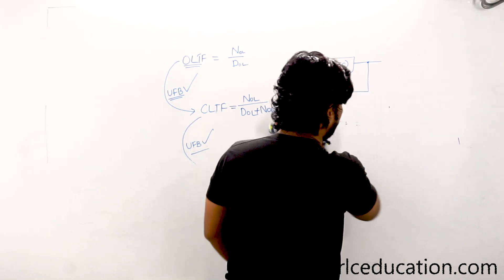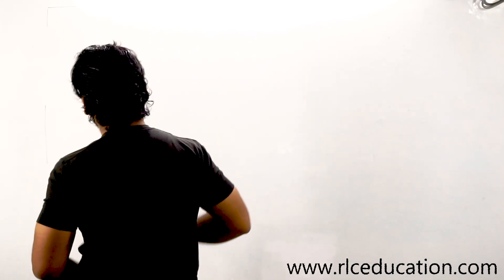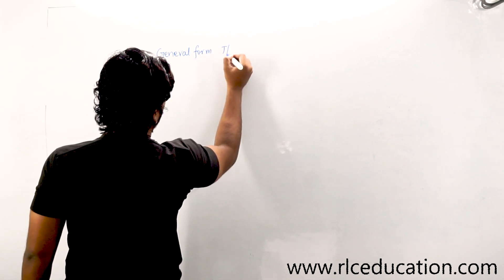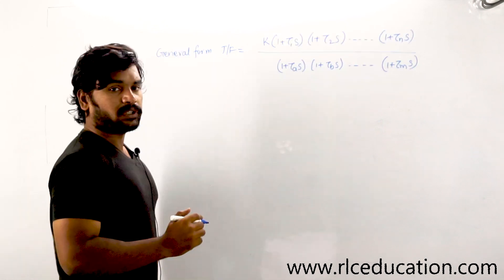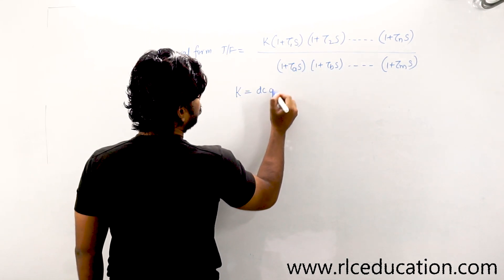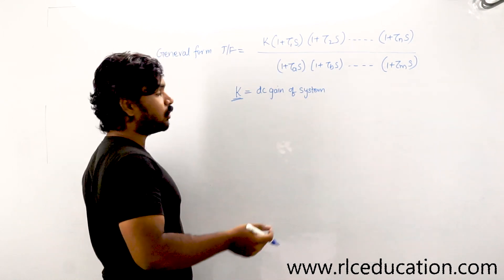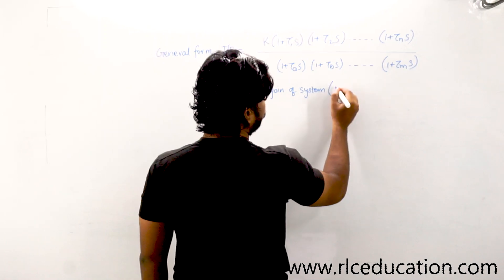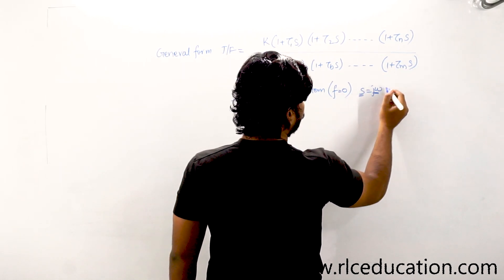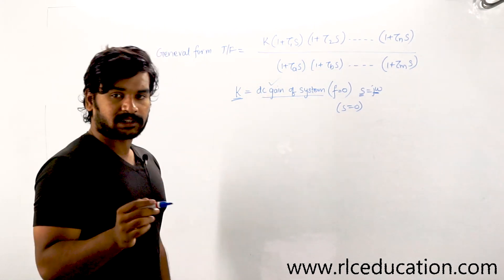Transfer function is the Laplace transform of the impulse response of a system, assuming zero initial conditions. The general form of a transfer function in a control system has K, which gives the DC gain of the system. DC gain means: when you apply a DC input to the system, what is the output? Since s = jω, when frequency is zero, s = 0. So to find the DC gain of a system, you just put s equal to zero. The DC gain concept is very important for control system competitive exams.